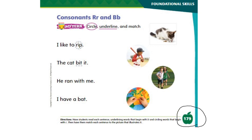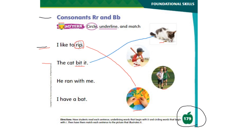Now on page number 179 for consonants R and B, we have to circle words that begin with R and underline words with B. I'll read the first sentence for you: I like to rip. As you can see, the word rip starts with R, so we need to circle it. Which picture shows 'I like to rip'? Can you match it? Yes, this one. Now let's read the second one: The cat bit it. The word bit begins with B, so we underline the word bit. Which picture shows 'the cat bit it'? Yes, this one.